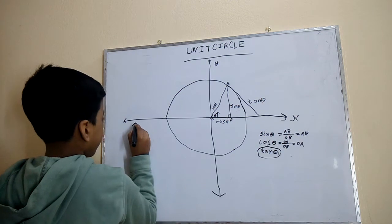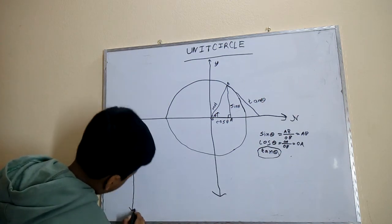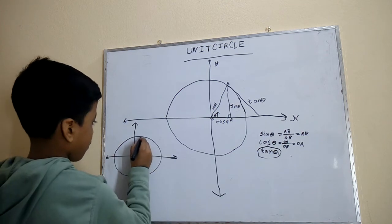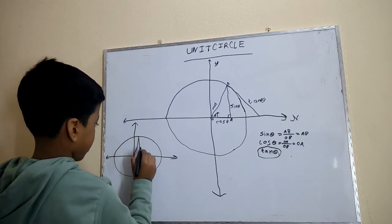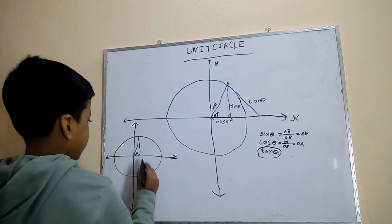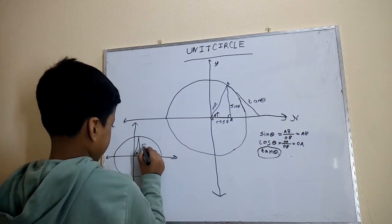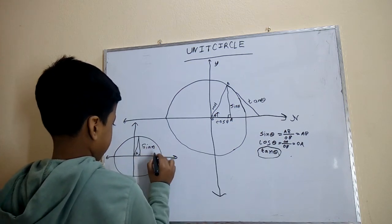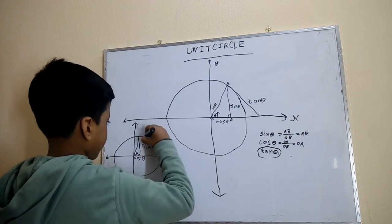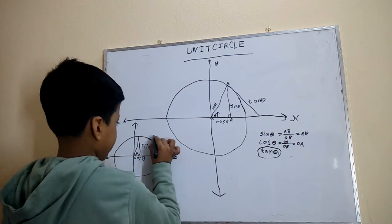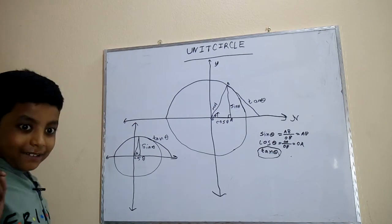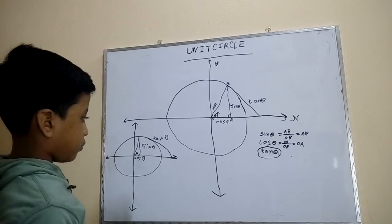This is what happens when we increase theta. As you can see, theta has increased a lot. Sine theta also increased, cos theta decreased, and tan theta increased. Now let's see what happens when we take theta up to 90 degrees.